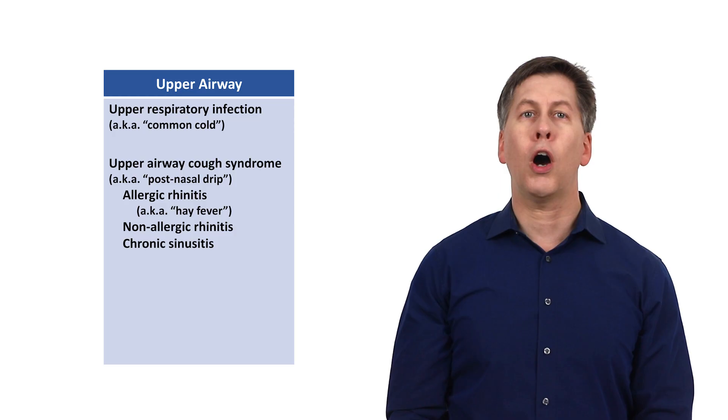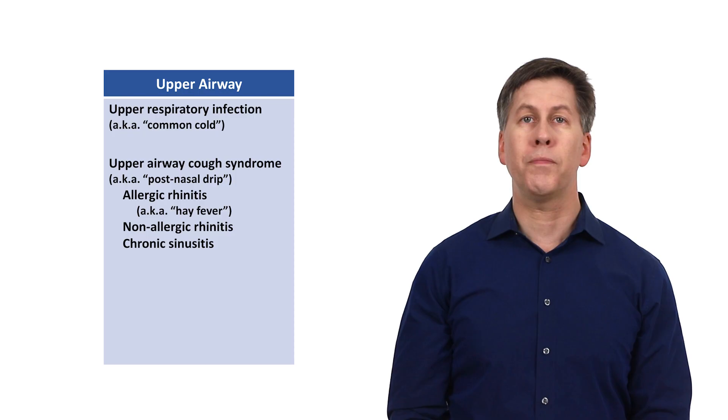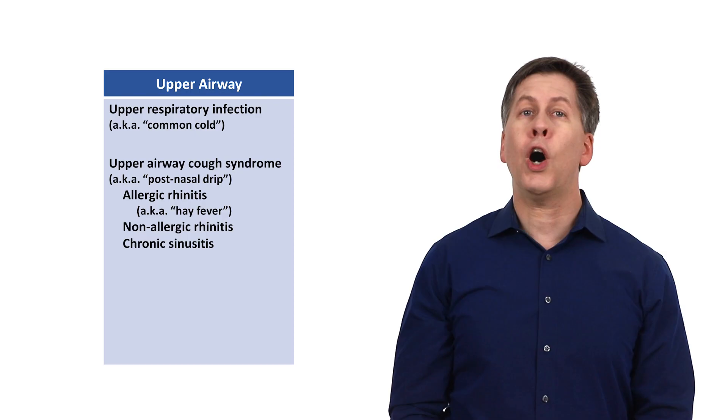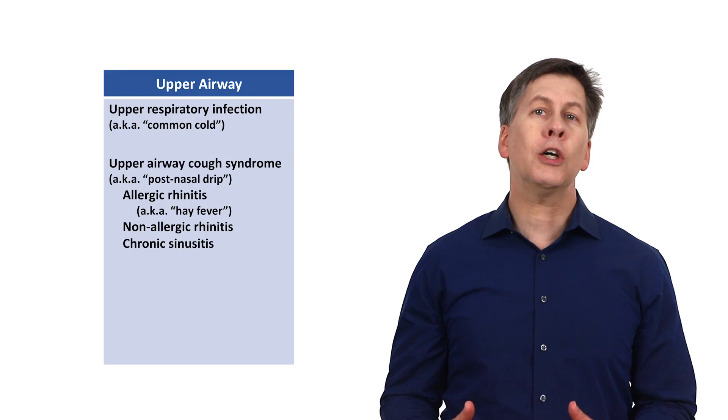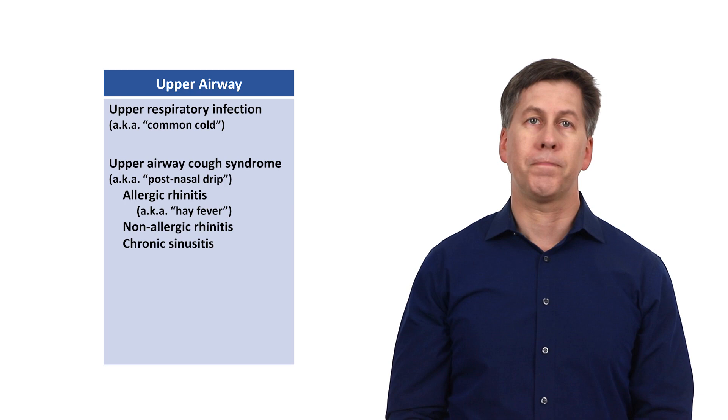The conditions under upper airway cough syndrome all cause subacute to chronic nasal congestion, runny nose, also known as rhinorrhea, sneezing, sinus pressure, and of course cough. Their underlying mechanisms differ, but they can be difficult to distinguish clinically. The terminology and subclassification of upper airway cough syndrome also lacks current consensus.